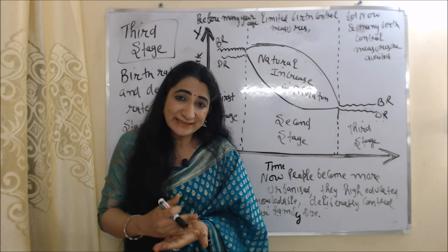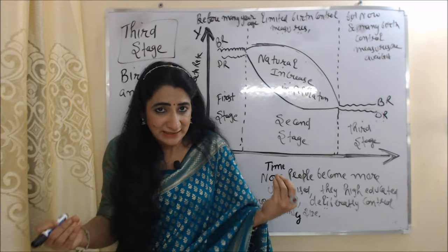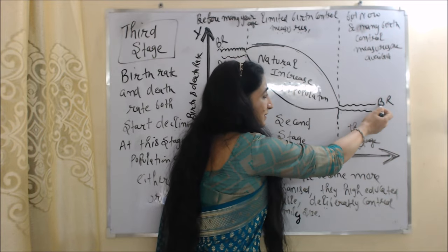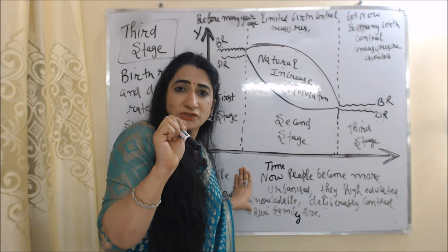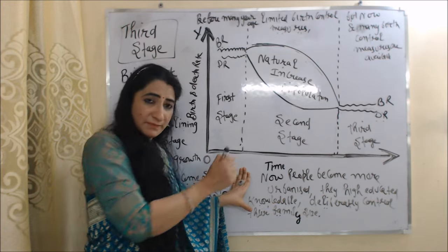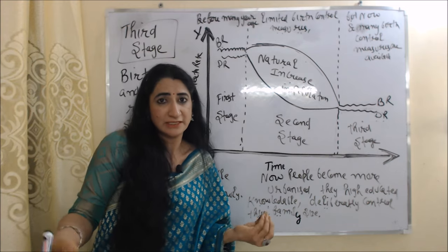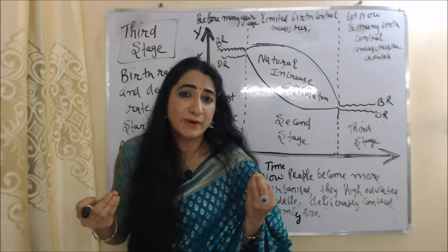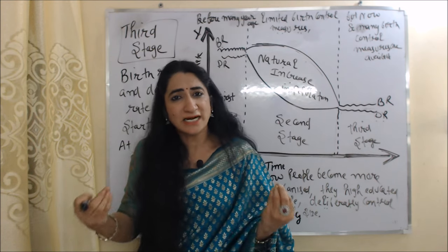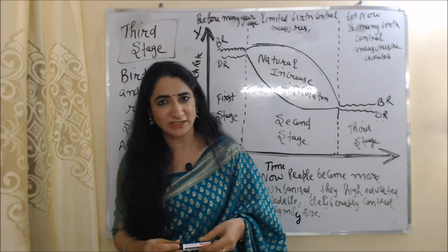In the third stage, both birth rate and death rate start declining. In this diagram you can see that in the third stage both rates are very low, and population growth either becomes stable or grows very slowly. Now people have become more urbanized, they are highly educated and knowledgeable, and they are deliberately controlling their family size. Many years ago, limited birth control measures were available, but now there are so many birth control measures available that people can easily control their family size.